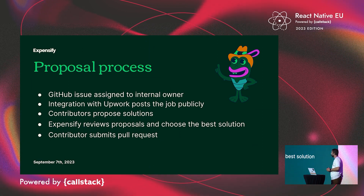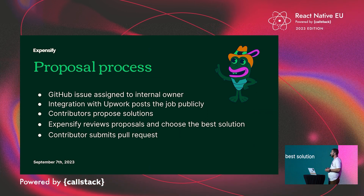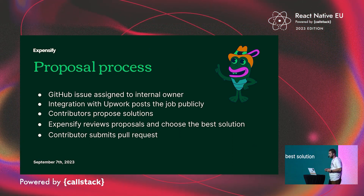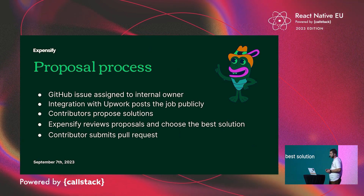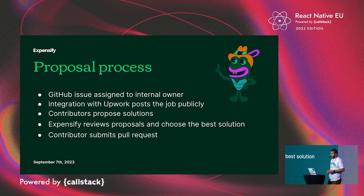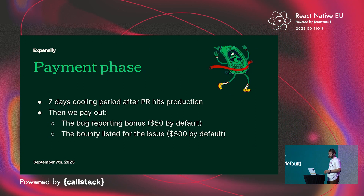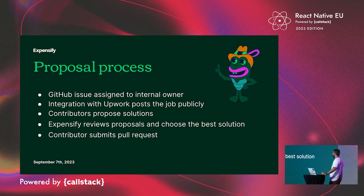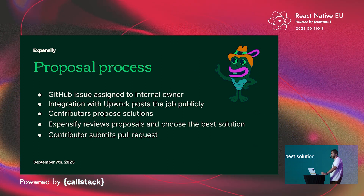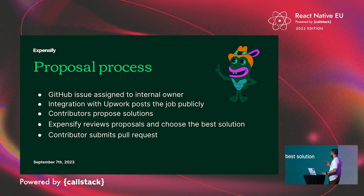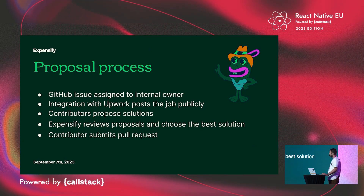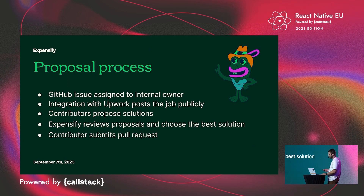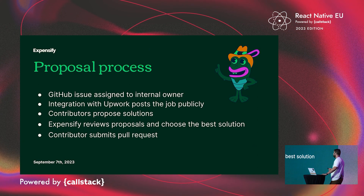The next step is the proposal process. Once a GitHub issue is created, it's assigned to an internal owner — we call this person our bug zero assignee. They evaluate the bug, make sure it's reproducible, and confirm whether the expected behavior is what we want. Then they determine if it's a front-end or back-end issue. If it's a front-end issue, they assign the external label, which triggers an automation with Upwork — our talent recruiting platform — and posts the job publicly. The base rate automatically applied to all bugs is currently $500. Contributors find the post through GitHub or Upwork, investigate the bug, and propose a solution. After some time, an Expensify engineer reviews proposals, selects the best solution, and then the contributor is free to submit the pull request.